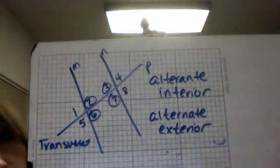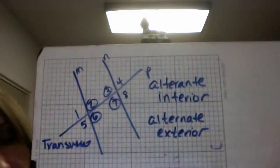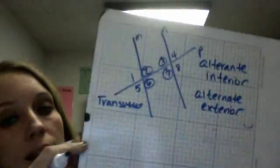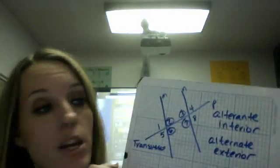Now alternate interior are going to be ones that are on opposite sides of the transversal, but you're going to be going from each intersection.